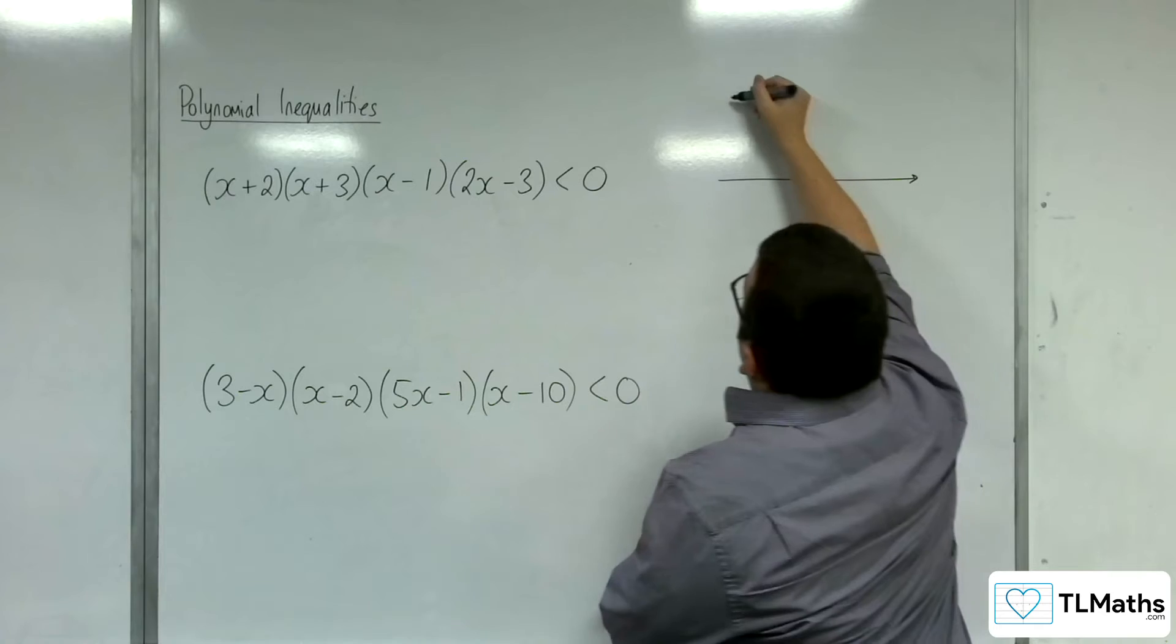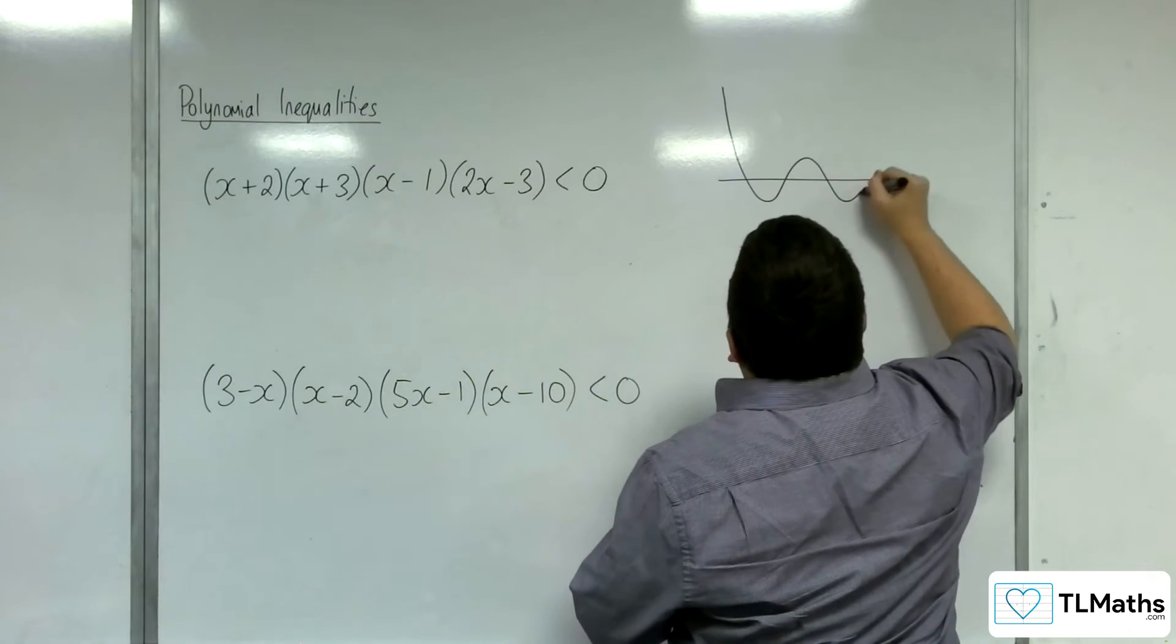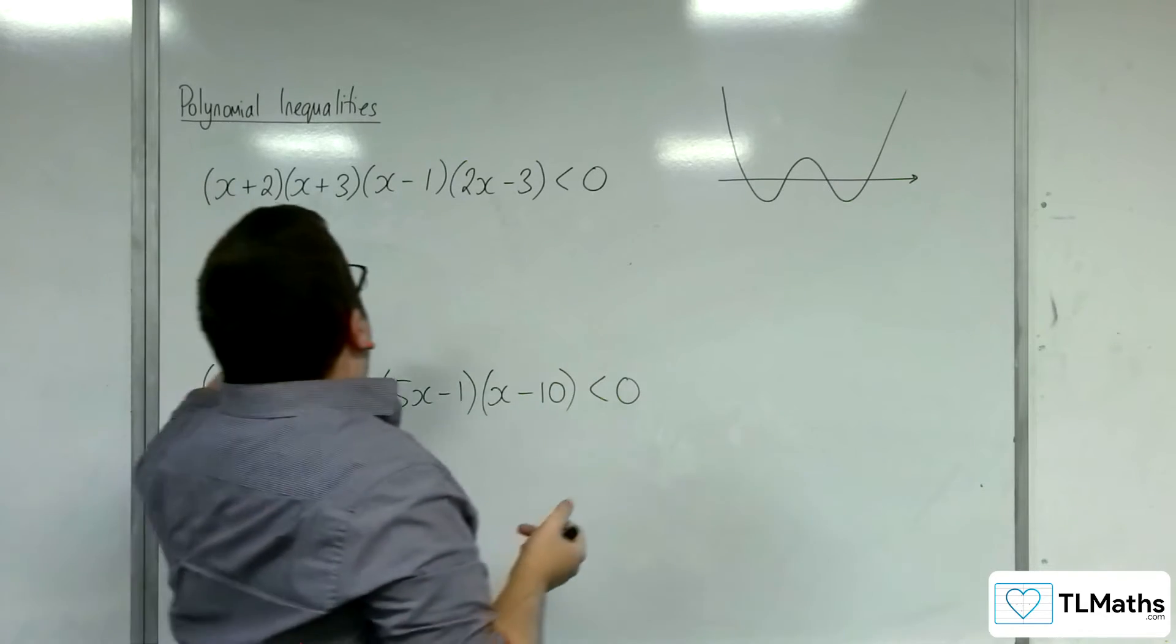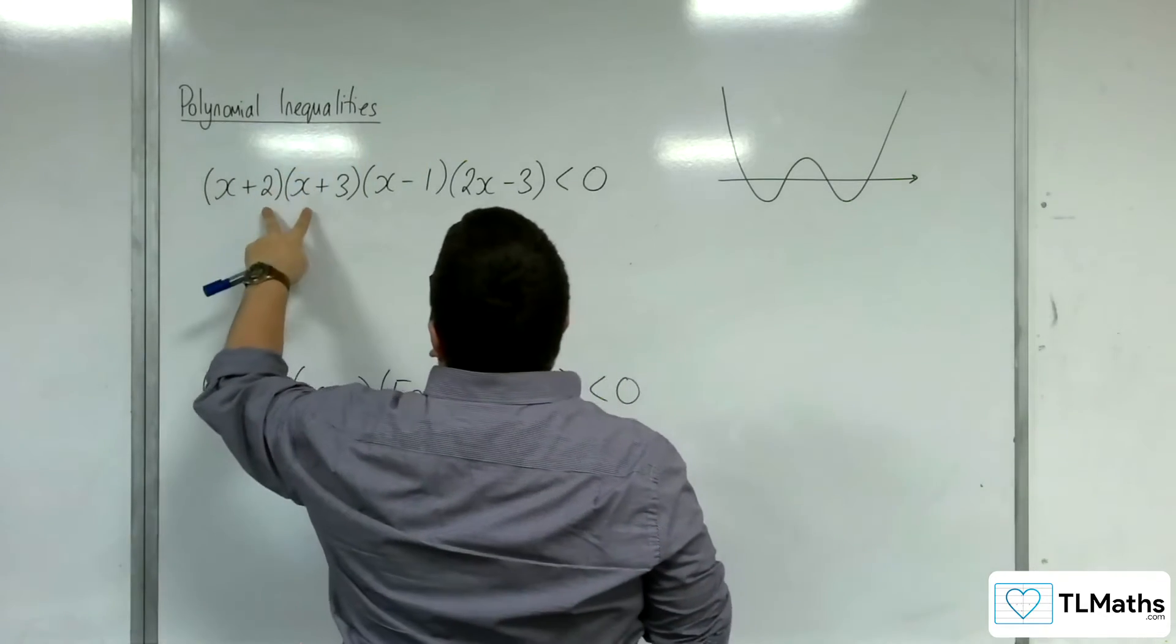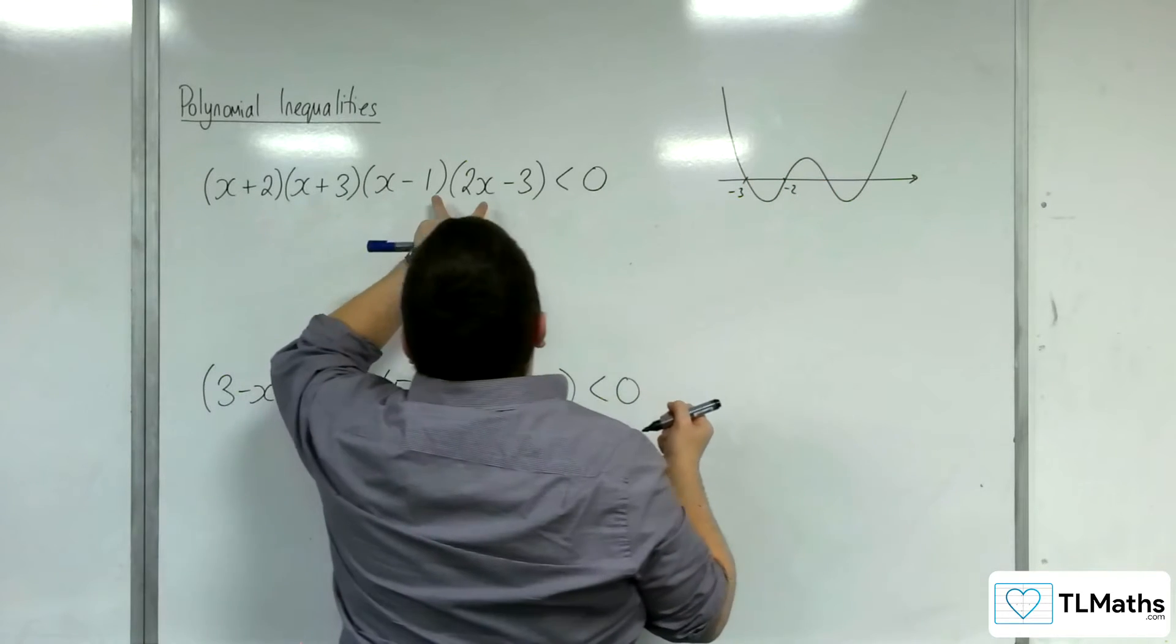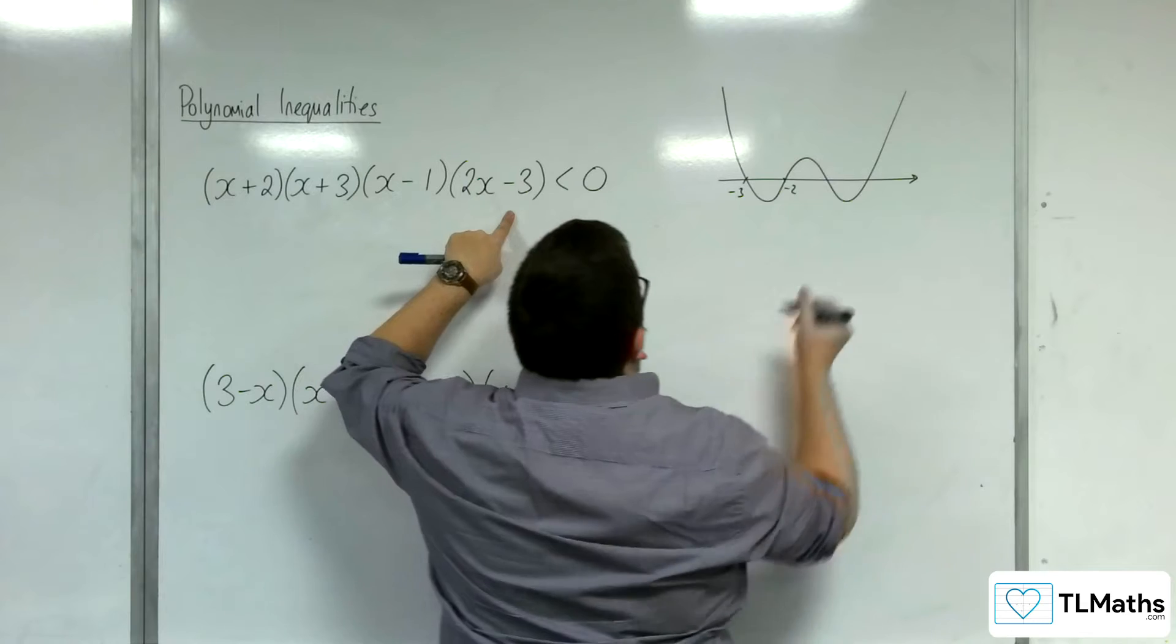So, start on the top left to top right. So we have minus 3, minus 2, we have 1, and 3 halves.